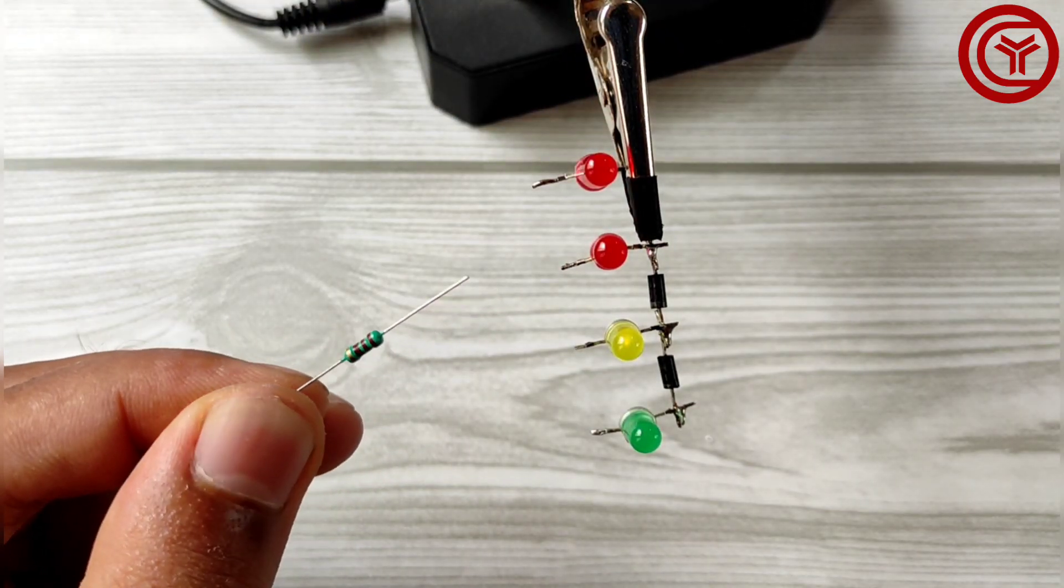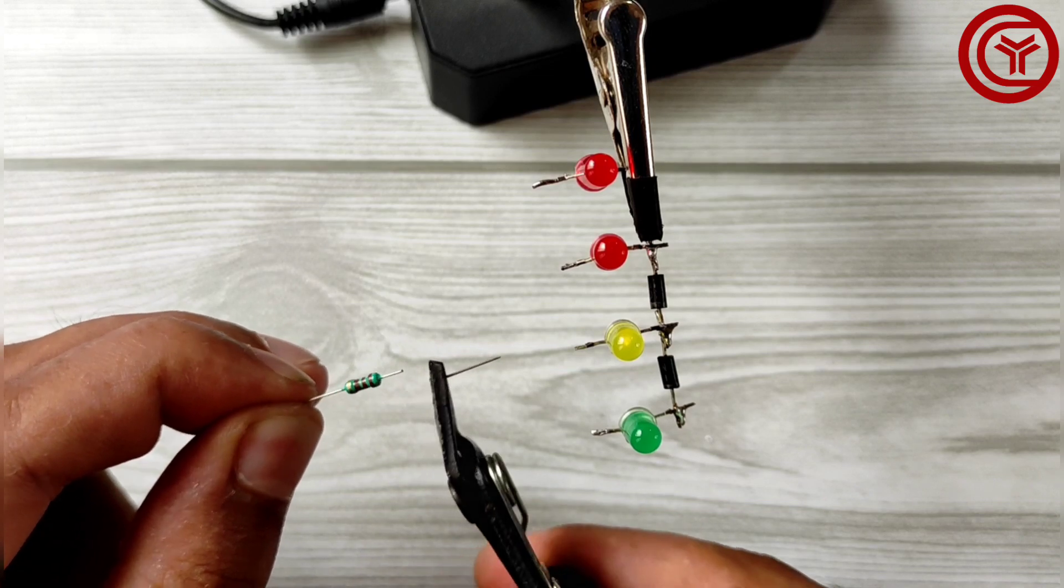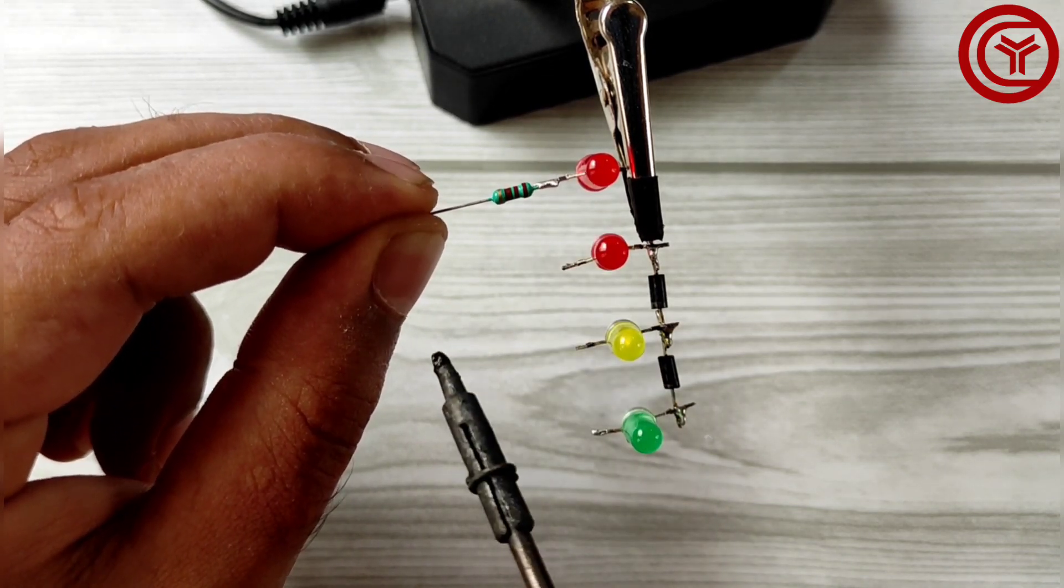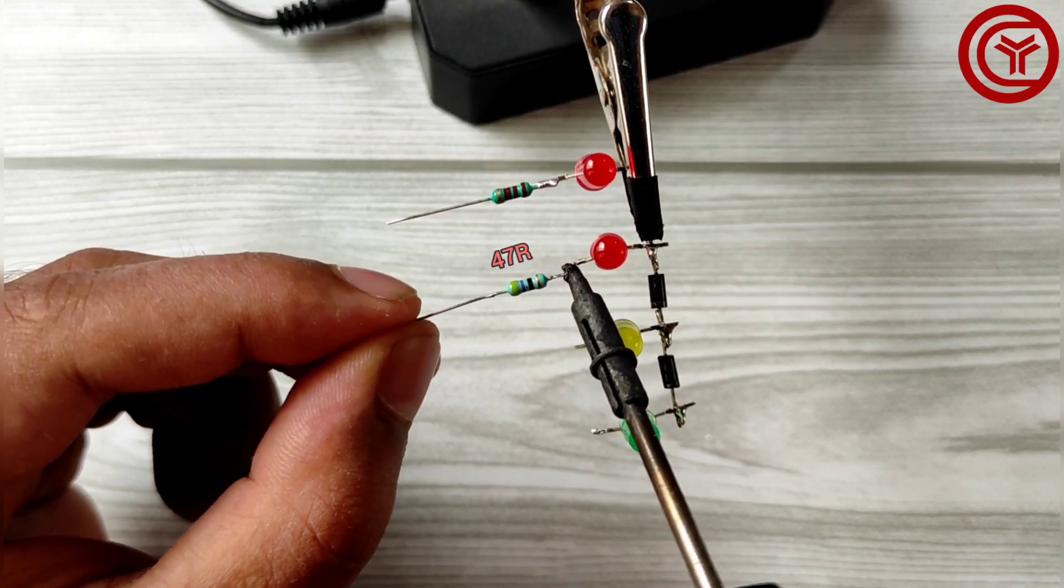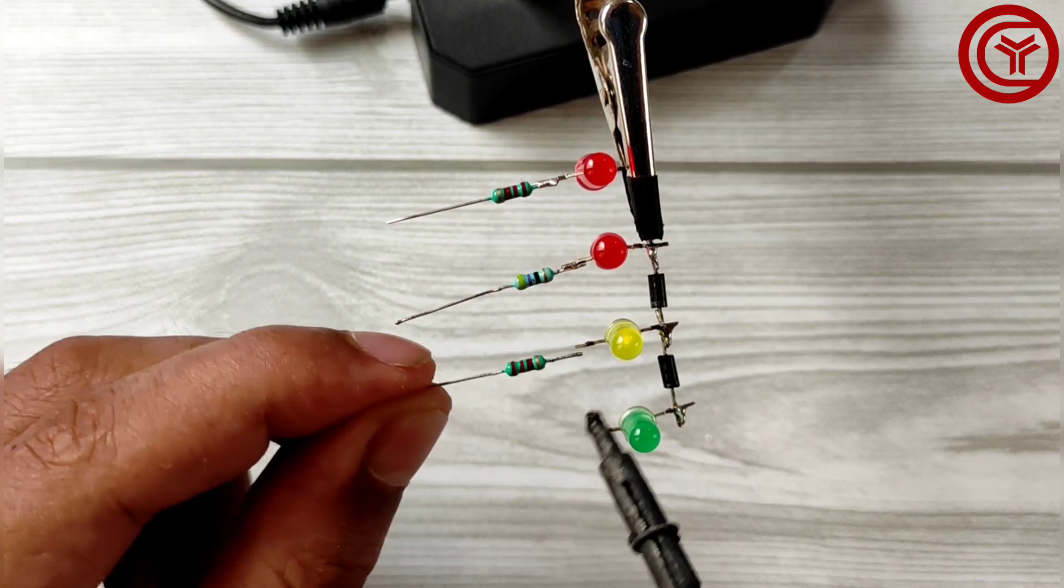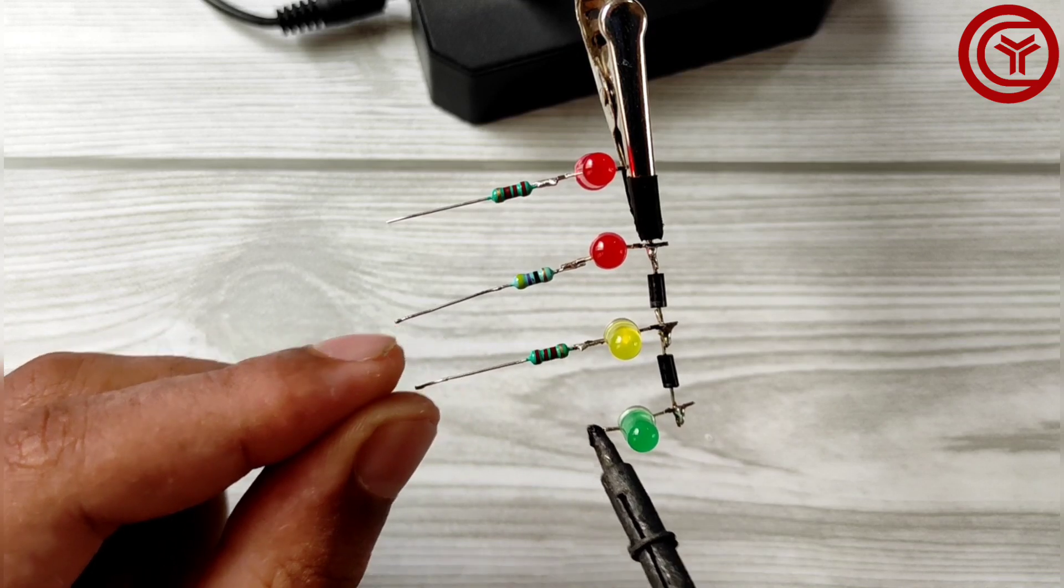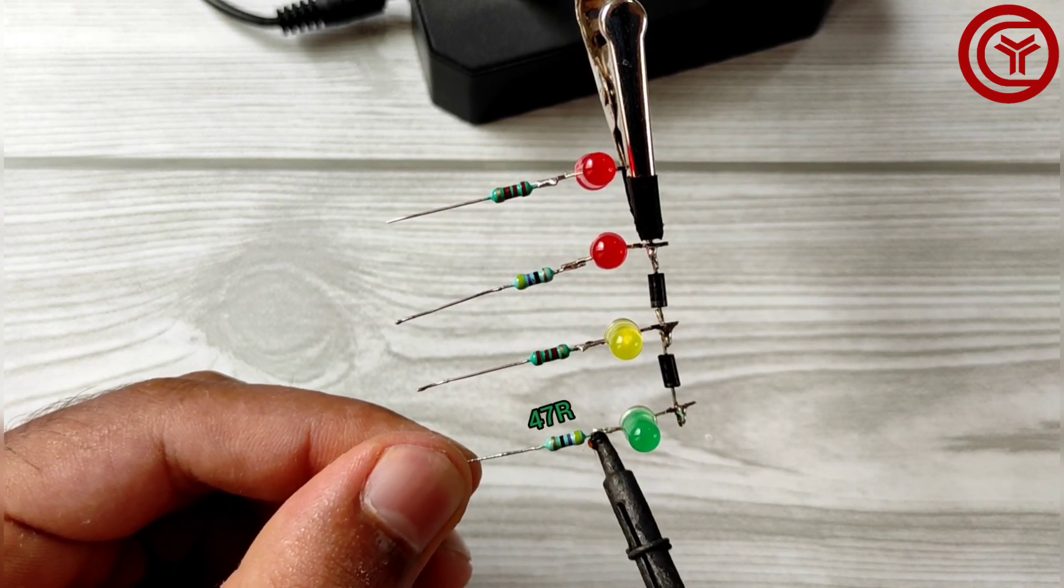Take 220 ohm resistor and solder on first red LED. Solder 47 ohm resistor on second red LED. Solder 220 ohm resistor on yellow LED, and solder 47 ohm resistor on green LED.